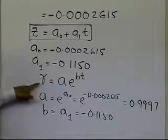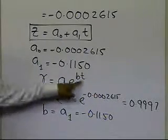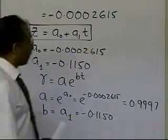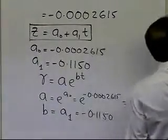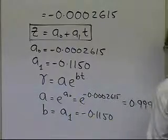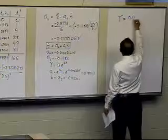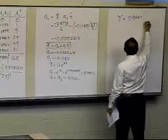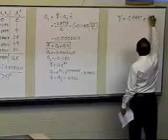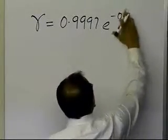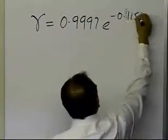This is the exponential model which you have, where the relationship between relative intensity and time is given. So based on the values of a and b, which I have found out, I have been able to find the constants of the regression model. So the regression model is gamma is equal to 0.9997 e to the power minus 0.1150 t.